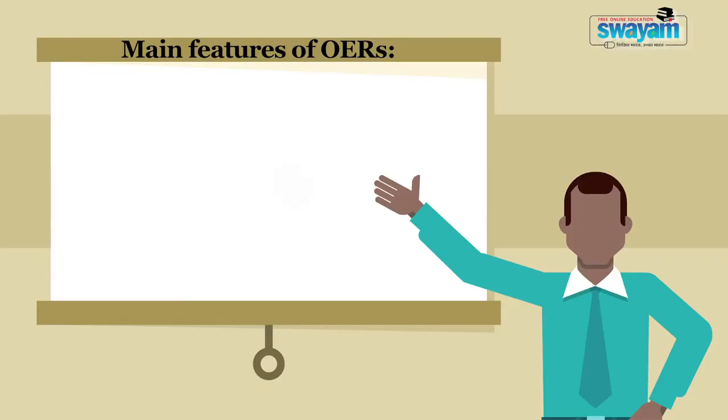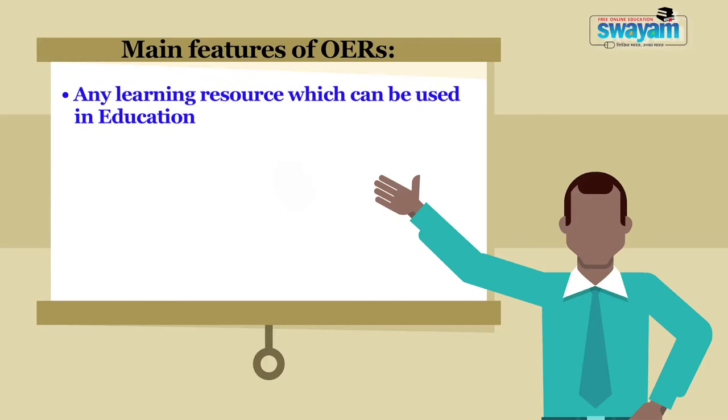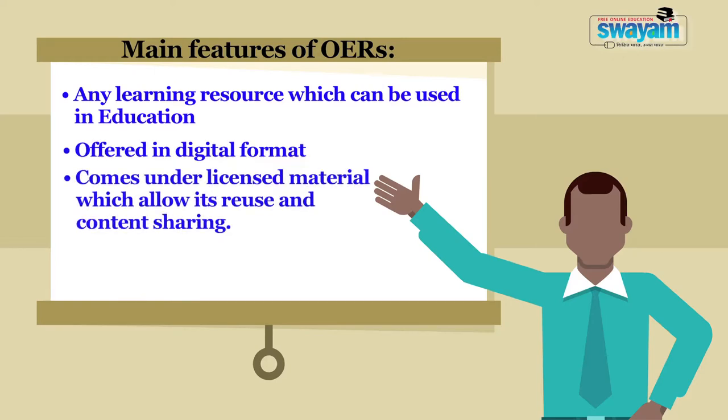Some general features of OERs: they are any form of learning resources which can be used in an educational setting; they are offered in digital format; the licensing format allows their reuse, sharing, mixing, and adaptation. OERs are defined as technologically enabled, open provision of educational resources for consultation, use, and adaptation for non-commercial purposes. They are typically made freely available over the web or internet, mainly used by teachers and educational institutions to support course development, but can also be used directly by students.